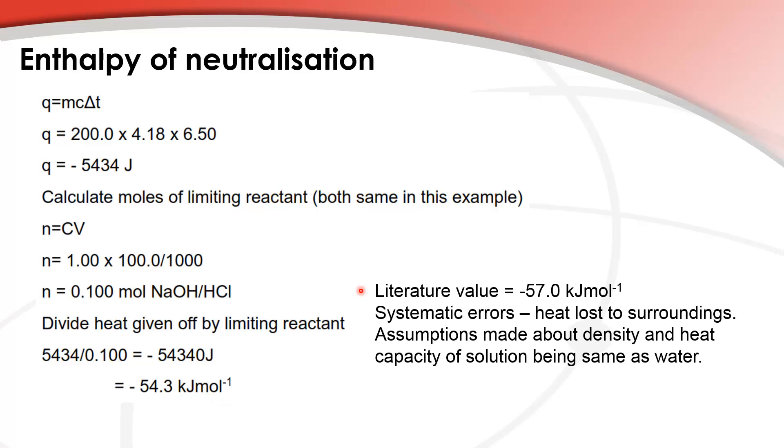And if we compare to the literature value which is negative 57.0 kilojoules per mole there's a little bit of a difference between our value and the literature value and the reasons for this, well we could have systematic errors so that heat loss to the surroundings and also the assumptions that we made about the density and the heat capacity of the solution being the same as water.